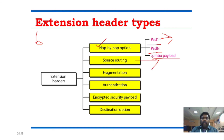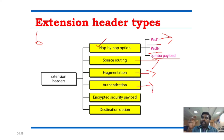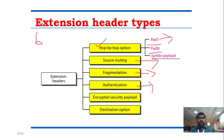The fragmentation extension header is used for fragmentation of data. The authentication header answers: where is the data from and who is the sender — it verifies the sender's identity. The Encrypted Security Payload extension header provides security through encryption and decryption techniques for the information being transmitted.